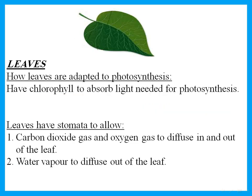The function of leaves is to do photosynthesis. How are leaves adapted to this function? Leaves have chlorophyll to absorb light, which is needed for photosynthesis. Leaves also have stomata — the holes at the bottom of the leaves. These holes allow carbon dioxide gas and oxygen gas to diffuse in and out of the leaf. It also allows water vapor to diffuse out of the leaf, which we refer to as transpiration.